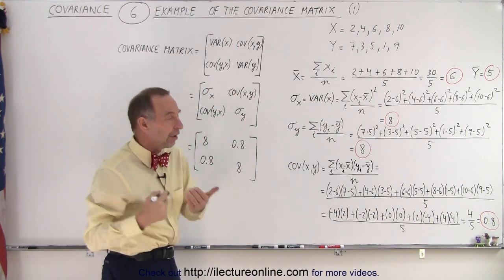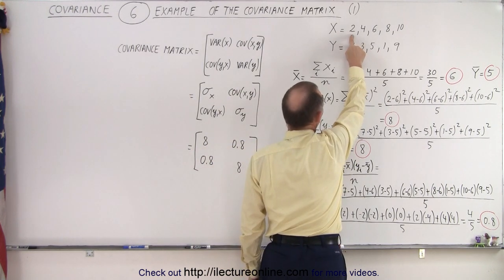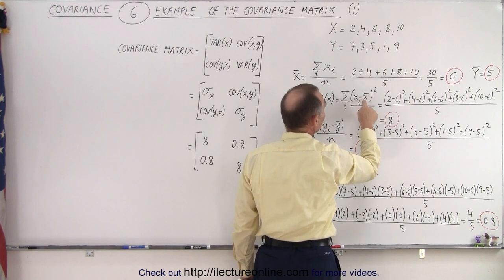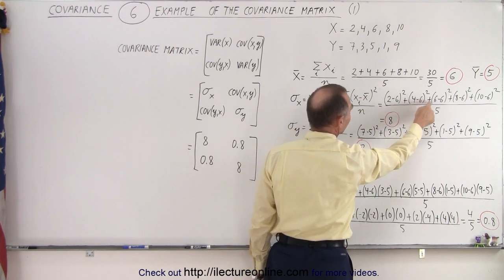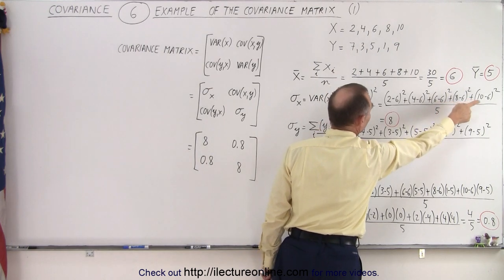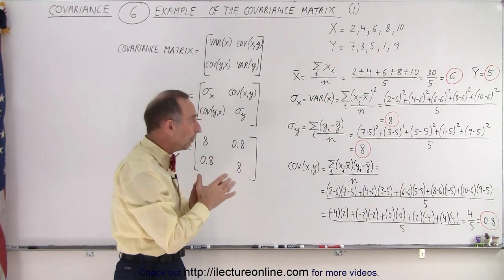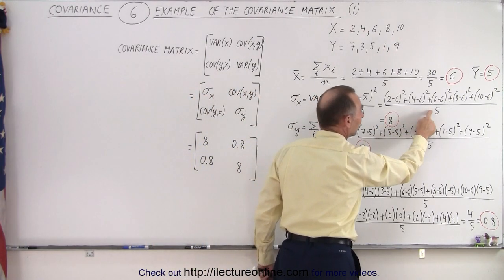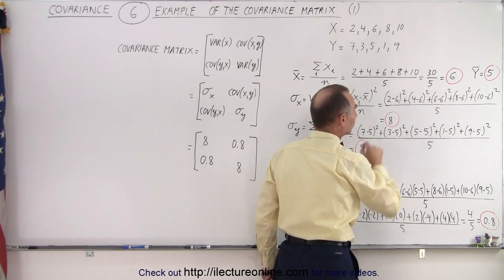And then we calculate the variances. So what we do is we take each of the elements of the first data set, 2, 4, 6, 8, and 10, and subtract from each one of them the average. So we take 2 minus 6, 4 minus 6, 6 minus 6, 8 minus 6, 10 minus 6, and we then take that difference and square it, add them all up—that's what the summation sign means—and then we divide it by the number in the data set. There's 5 of them. We end up with a number equal to 8.